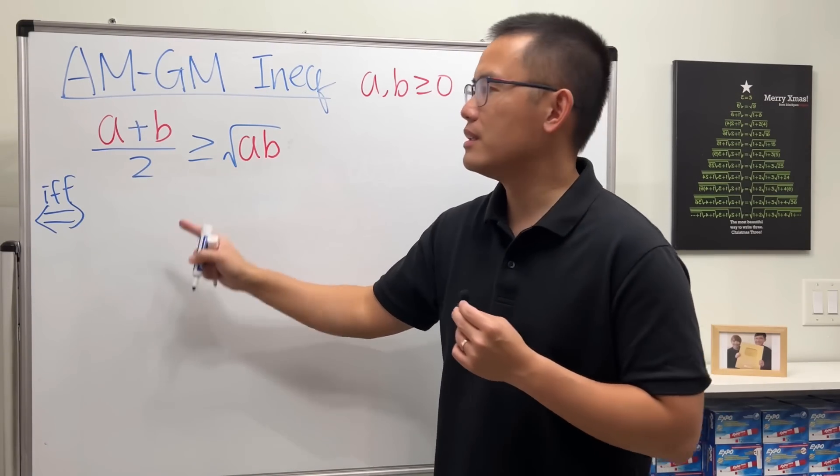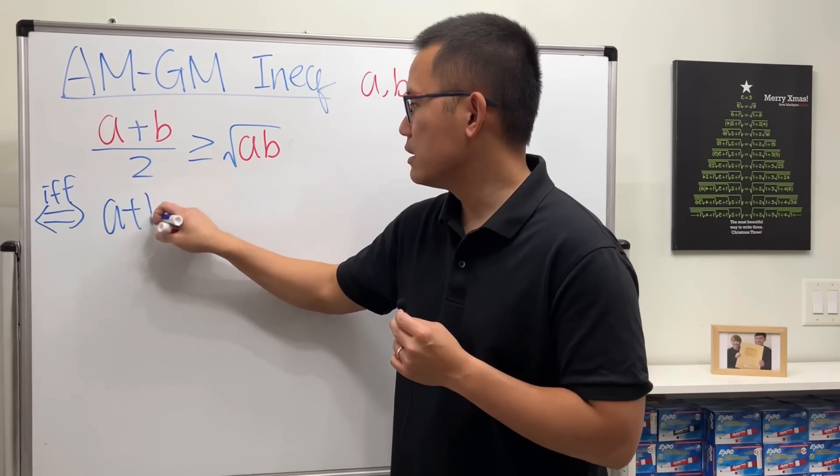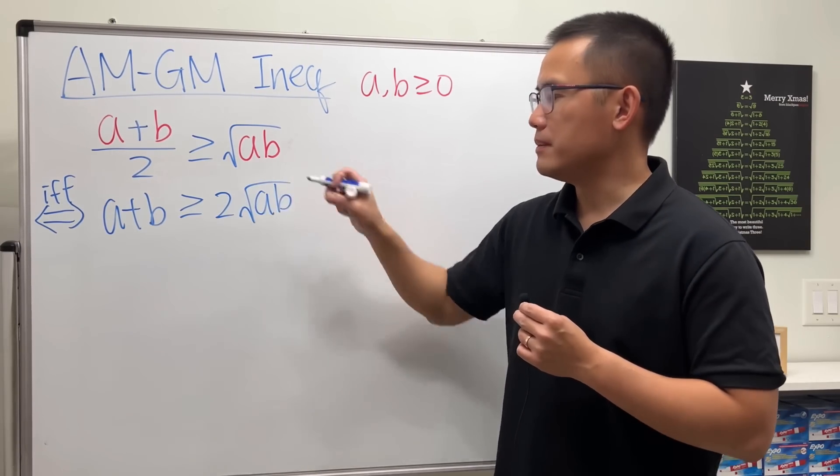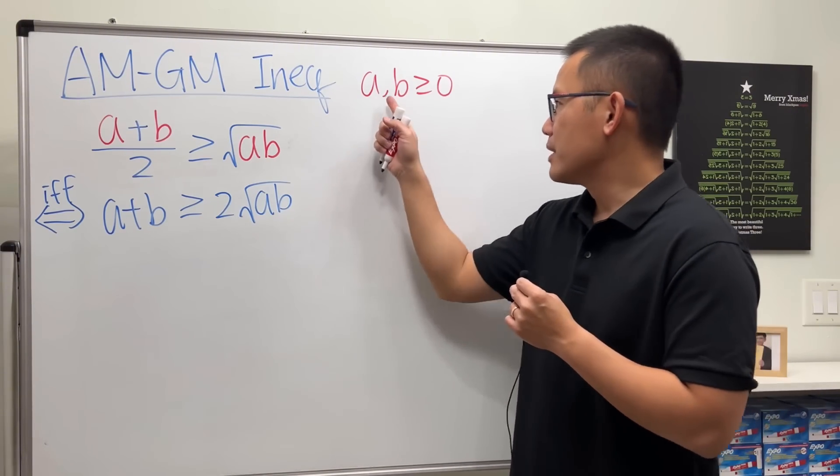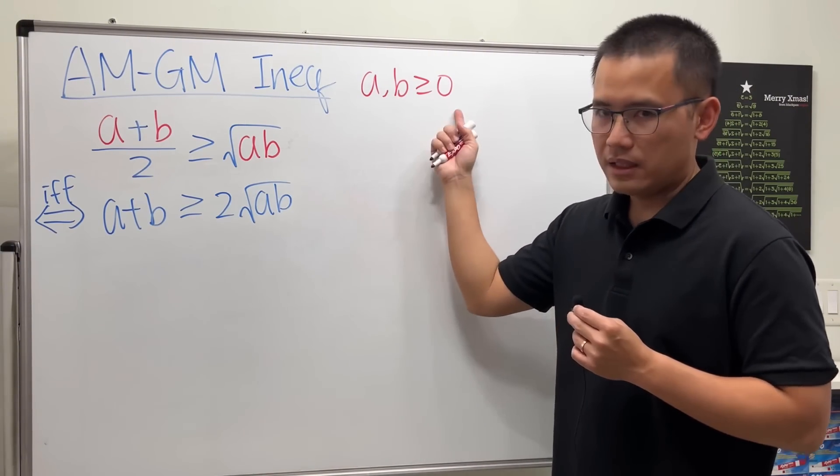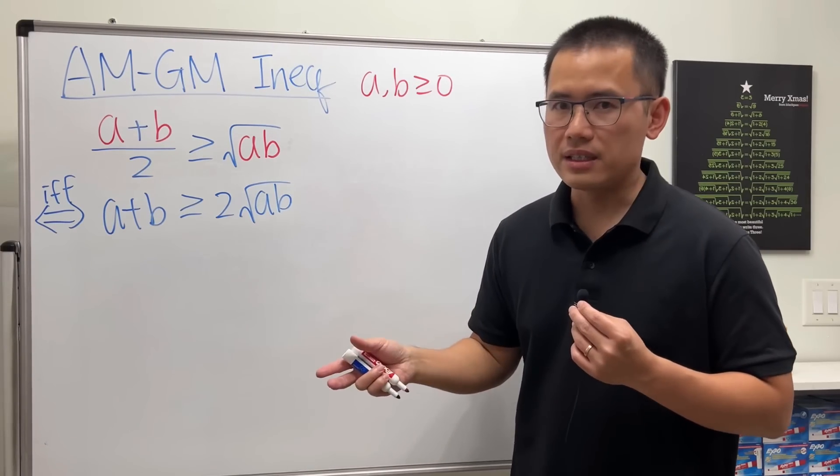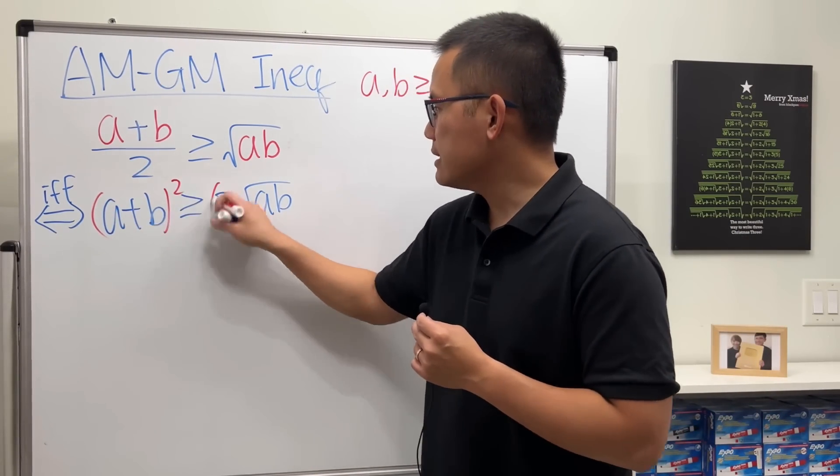Then, because a and b are not negative, that means this and that will be both non-negative. So we can square both sides without changing the inequality symbol.